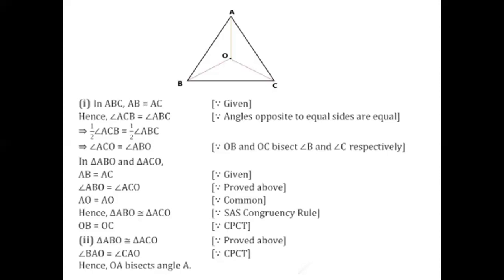Now let me consider triangle ABO and triangle ACO. Look into the figure — triangle ABO and triangle ACO. What can I say about these two triangles? First, AB is equal to AC — that's a given fact. Then, can I say that angle ABO is equal to angle ACO? Yes, I have already proved that in the fourth line. And what is common to both the triangles? AO is the common side.